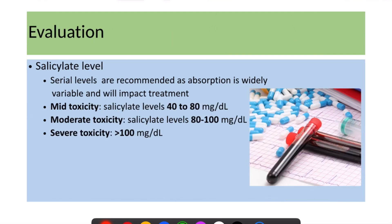Lab investigations can also help in diagnosis. Salicylate levels are very important and serial levels are recommended, as absorption is variable and impacts treatment. For mild toxicity, the salicylate level will be around 40 to 80 mg/dL; for moderate toxicity, 80 to 100 mg/dL; and more than 100 mg/dL indicates severe toxicity.